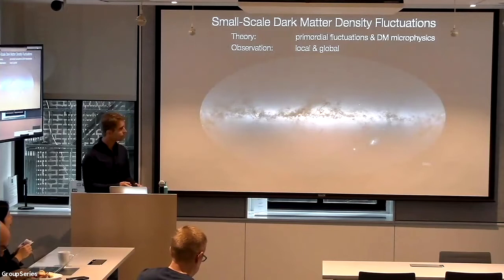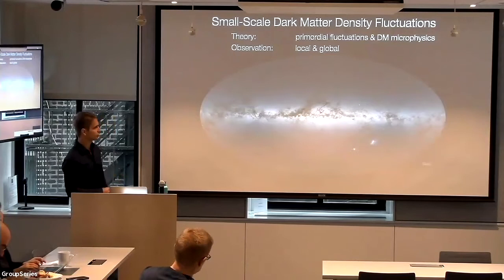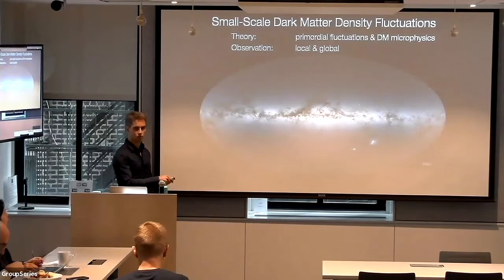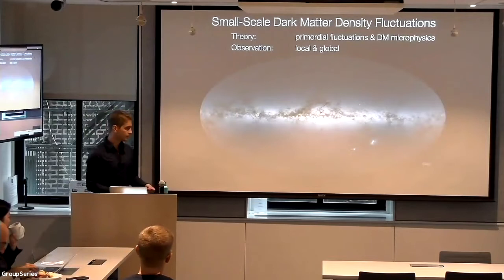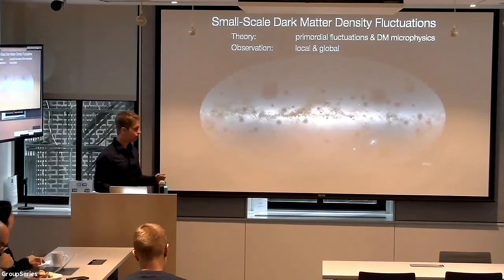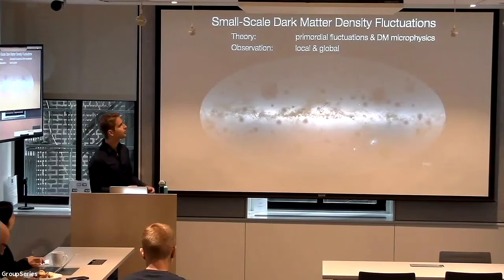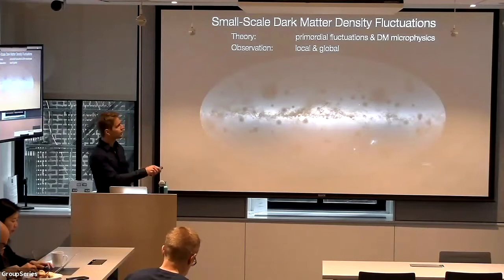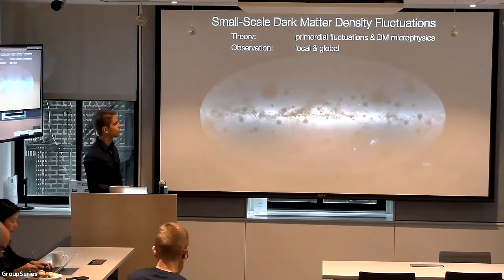Today I will mostly talk about new observational probes to detect substructures of the Milky Way that are much, much smaller than the Magellanic clouds — so small that they would not contain any baryons or even stars. This is a cartoon overlay of what this could look like: very small clumps in the Milky Way that do not emit light because they don't contain any stars.